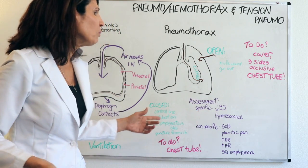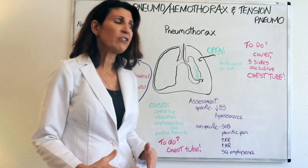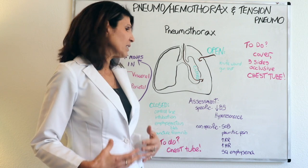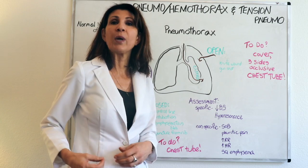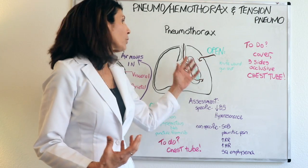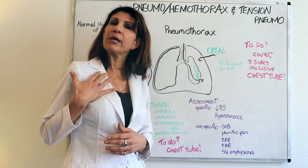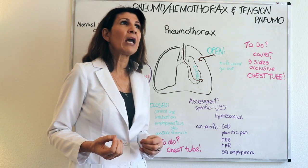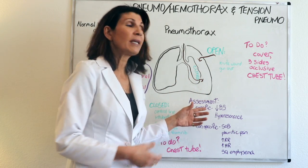How will the patient present? They're going to present in respiratory distress — nonspecific findings of being short of breath. They may have pleuritic pain, be tachypneic, tachycardic, and may show what's called subcutaneous emphysema, which is when air escapes from the airway through the skin. If you palpate it, it kind of feels like Rice Krispies. It's not a normal finding — not immediately deadly, but something you need to investigate.